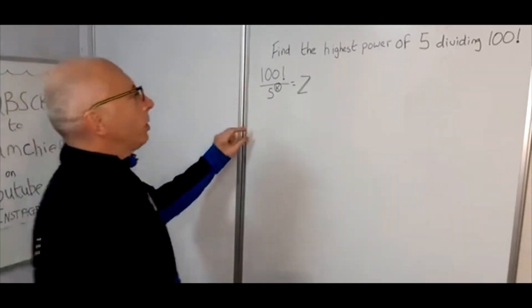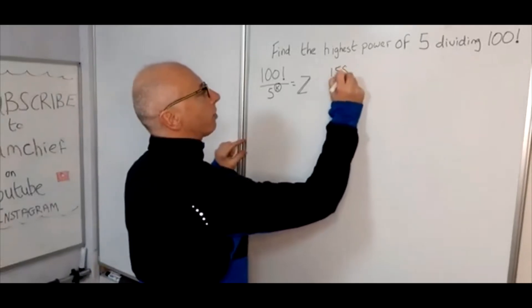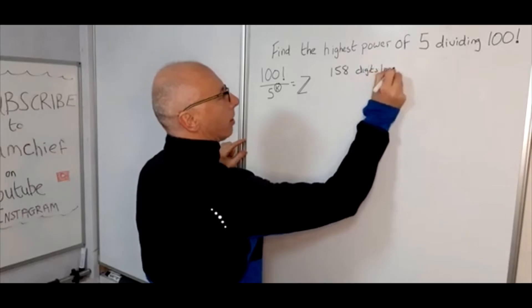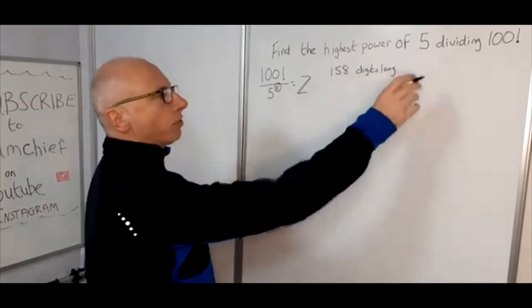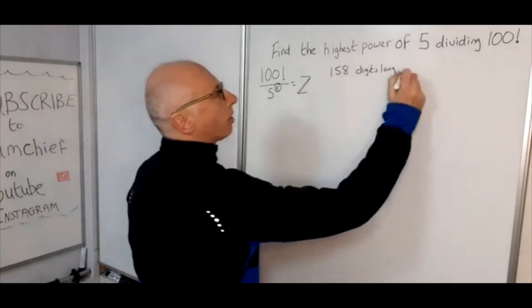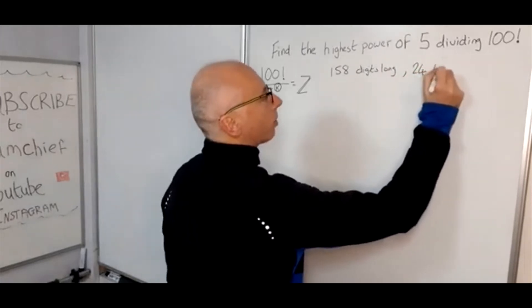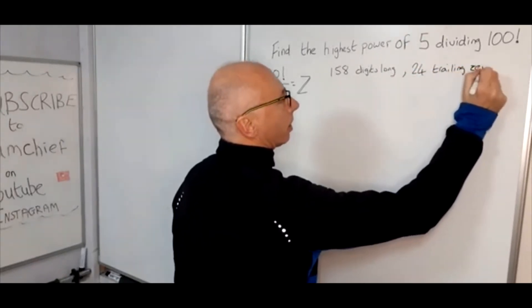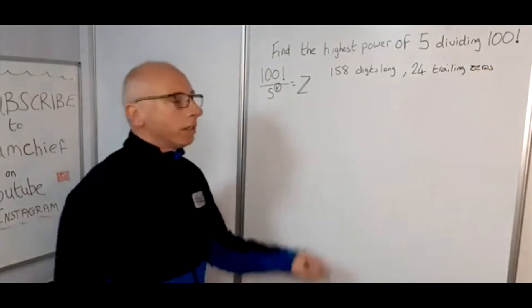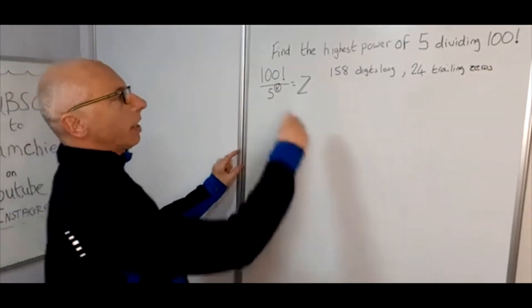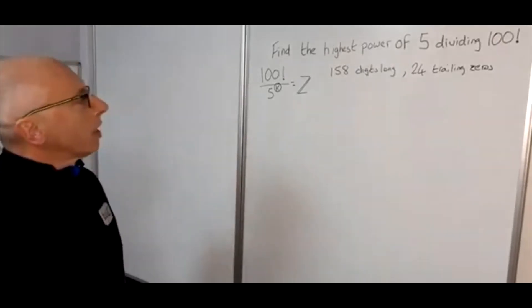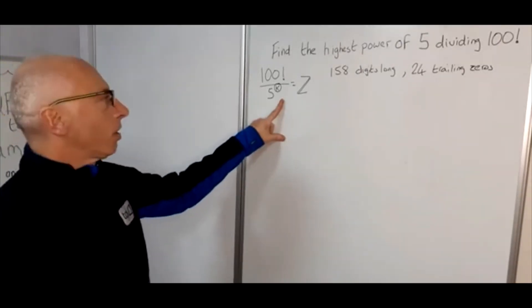100 factorial is 158 digits long. If you write this number out it's 158 digits with 24 trailing zeros. Before we even start, this number is massive. If I was to write this number out it would probably fill the board here. So to do this by brute force is not going to work.